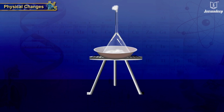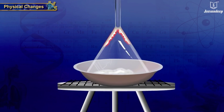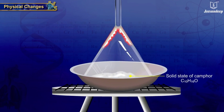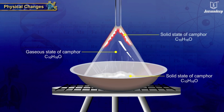This is a physical change in which the form of matter is altered to its vapor state and then back to solid. But its chemical composition remains the same.